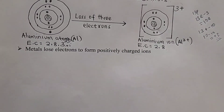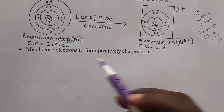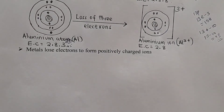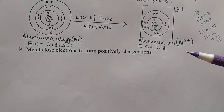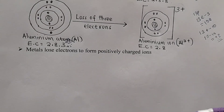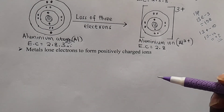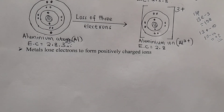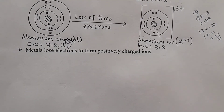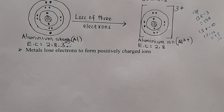In summary, metals lose electrons to form positively charged ions. Sodium, calcium, and aluminum are all metals. In our next class, we are going to be dealing with anions.